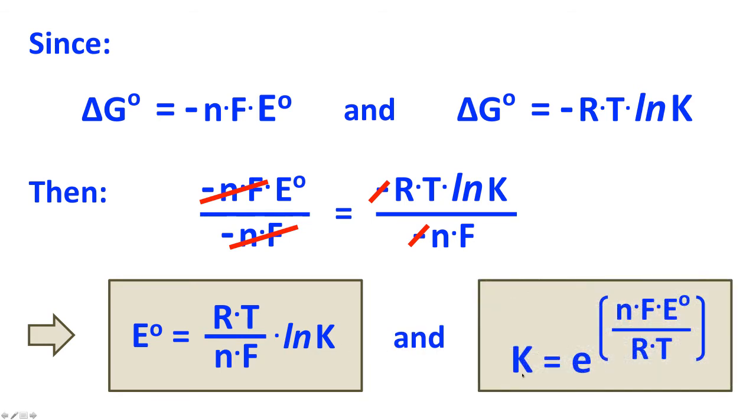And of course, we can also solve this relationship for K basically by putting the RT and NF on the other side of the equation and then taking the inverse of the ln function. And if we do that, we get K, the equilibrium constant, equals E to the NFE naught over RT. So we now have equations relating delta G and delta G naught and E and E naught. And from our previous equation relating delta G naught to K, we now can also relate E naught to K or K to E naught. So these relationships are quite useful in electrochemistry.